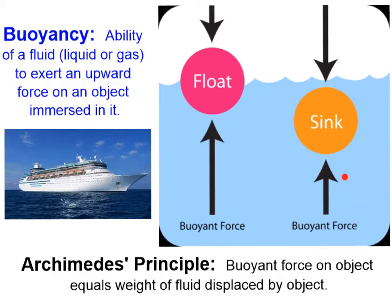For example, if we place an object in water, it's going to push water out of the way and displace that water as it begins to sink. It will only displace water until the weight of the displaced water equals the entire weight of that object. In our diagram, the weight of the water being displaced is less than that of the object, so this object sinks — that's Archimedes' principle.